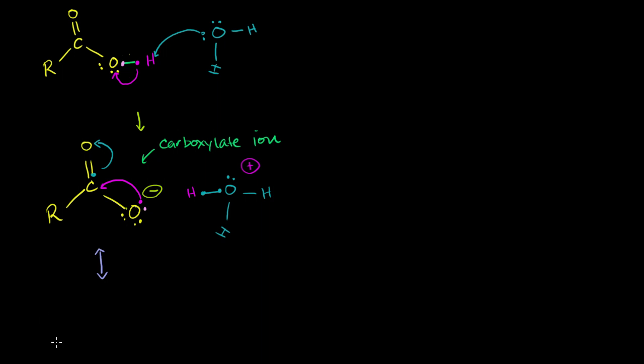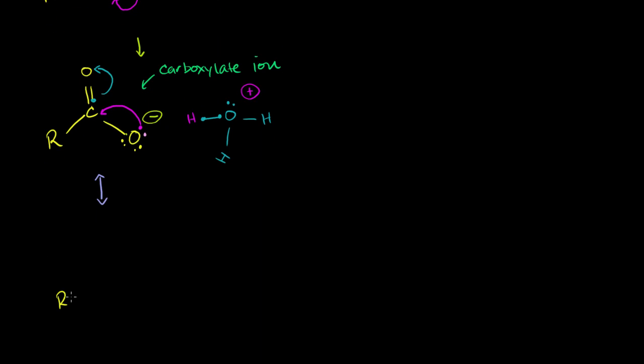So it is resonance stabilized with this structure right over here. It could look like this. And now this took back this blue electron. So now one of the bonds is gone. And it started off with two lone pairs. And now it has another lone pair. It has this electron, this electron. And now it has that blue electron right over there. And now this oxygen, this top oxygen, has a negative charge.